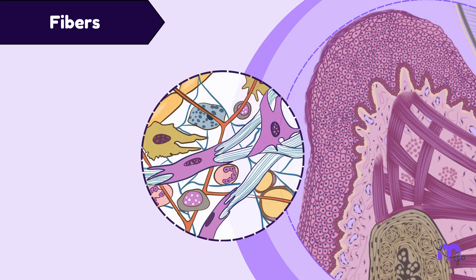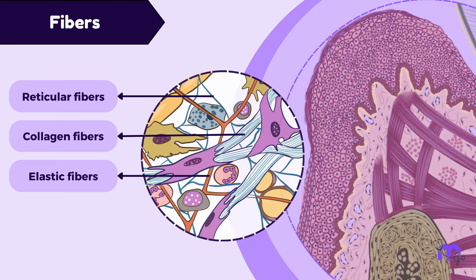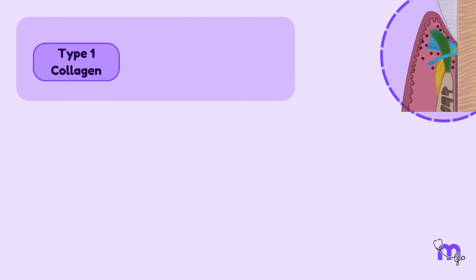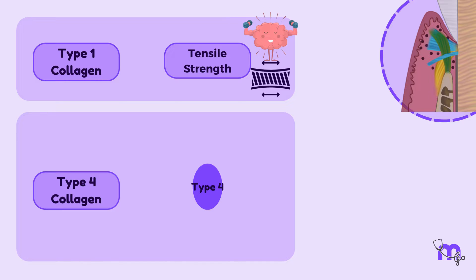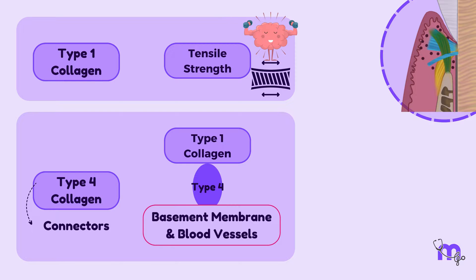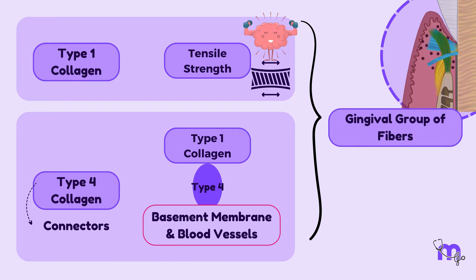Next, we have fibres — the backbone of the lamina propria. The three main types are collagen, reticular, and elastic. Of these, type 1 collagen is predominant, offering tensile strength. Meanwhile, type 4 collagen fibres act as connectors, linking type 1 bundles to the basement membrane and blood vessel walls. Together, these collagen bundles form the gingival group of fibres, providing foundational support essential for the tissue's structure and function.